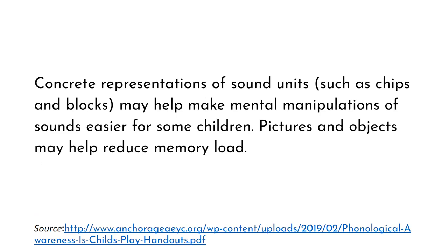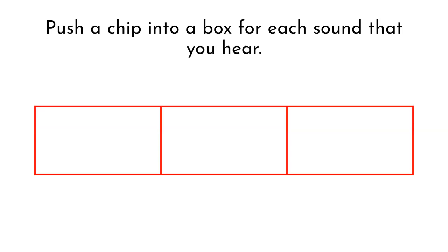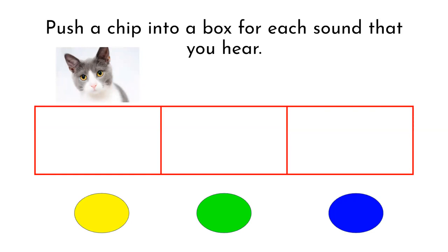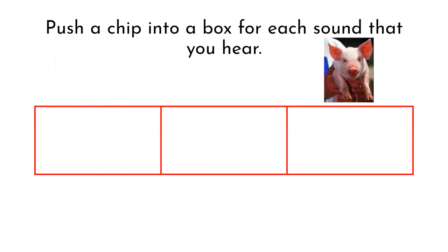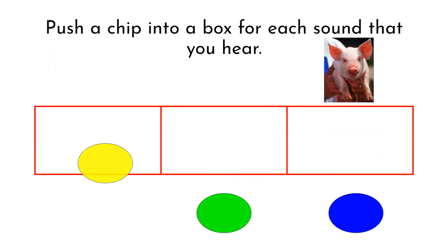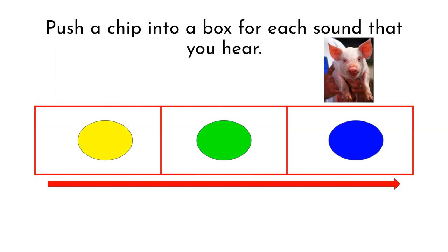Concrete representations of sound units, such as chips and blocks, may help make mental manipulation of sounds easier for some children. Push a chip into a box for each sound that you hear. Cat—there are three sounds in cat: cuh, eh, tuh. Pig—there are three sounds in pig: puh, ih, guh. This activity helps students attend to individual phonemes by segmenting and then blending the phonemes heard in a word.